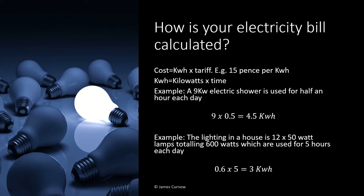For another example, if you imagine the lighting in a house is made up of 12 fifty-watt lamps totalling 600 watts, and the lights are used for 5.5 hours per day, we can convert the 600 watts into kilowatts by dividing by 1000, and the equation becomes 0.6 multiplied by 5.5 which comes to 3 kilowatt hours. The lighting in this example uses much less energy than the electric shower, however the lights are used for longer each day, so it is possible to reduce energy consumption by using energy efficient lighting such as LED lighting.